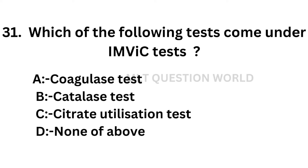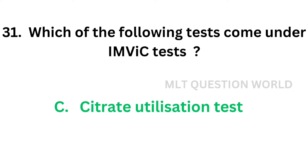Question number 31: Which of the following tests comes under the IMViC test? Option A: Coagulase test, option B: Catalase test, option C: Citrate utilization test, option D: None of the above. The correct answer is option C, citrate utilization test. IMViC stands for Indole, Methyl red, Voges-Proskauer, and Citrate test.